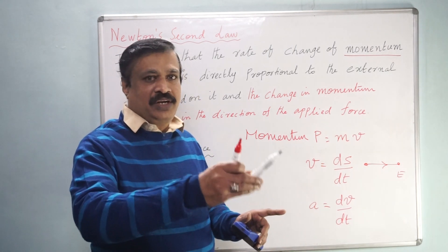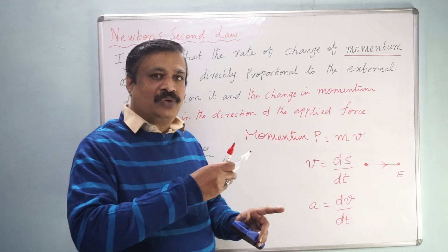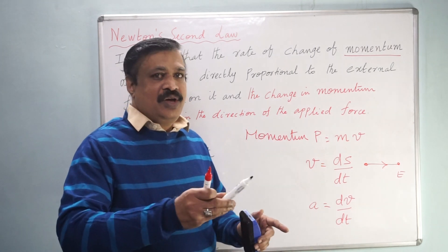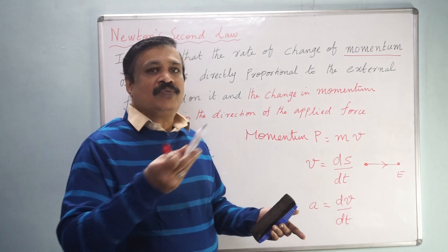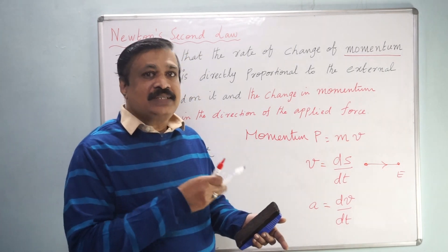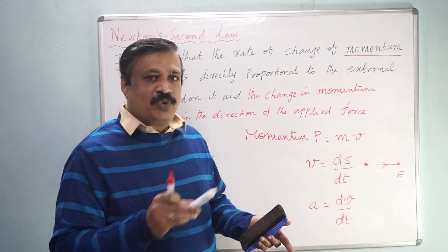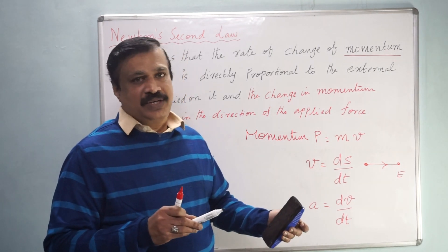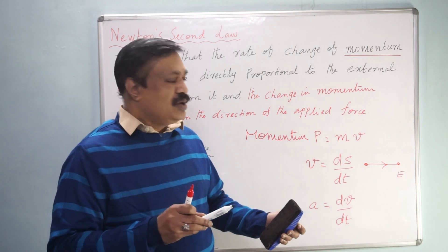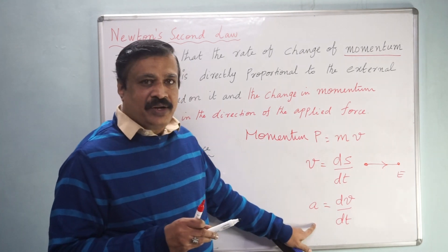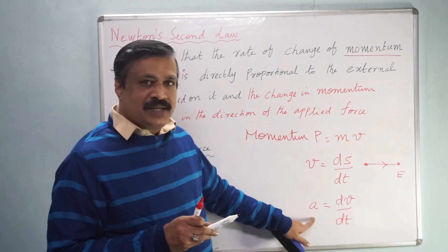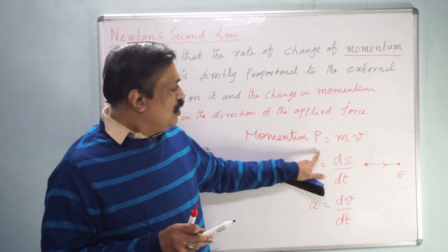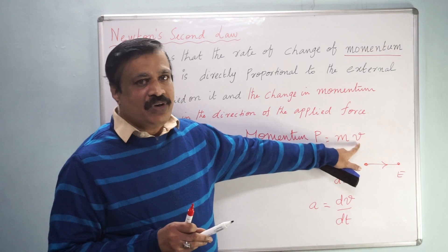For example, from 30 km per hour to 40 km per hour — then velocity is increasing. If it is 50 to 40, then the velocity is decreasing, so you can say minus acceleration, or simply retardation. Now these terms are defined — acceleration, velocity, and momentum. Momentum means mass into velocity.